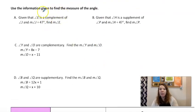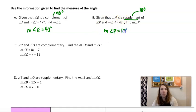All right. Given that E is a complement of J, and measure of J is 47, find E. So complement means 90. So if J is 47, 90 minus 47 is 43. Given that H is a supplement, that's 180, of P, and H is 47, find P. So the measure of angle P, 180 minus 47 is 133.